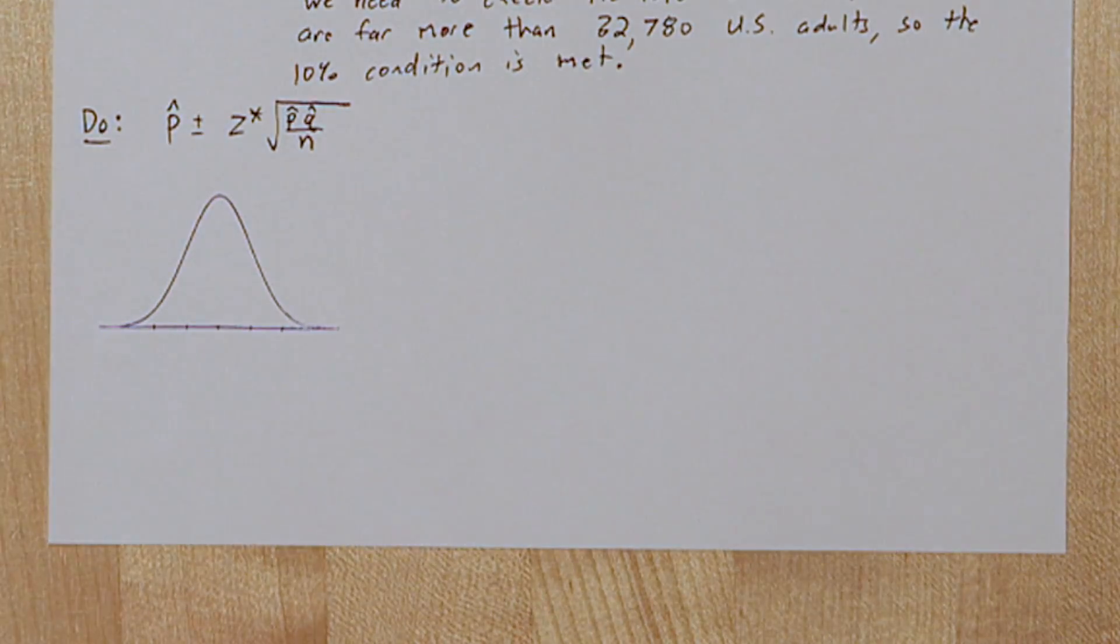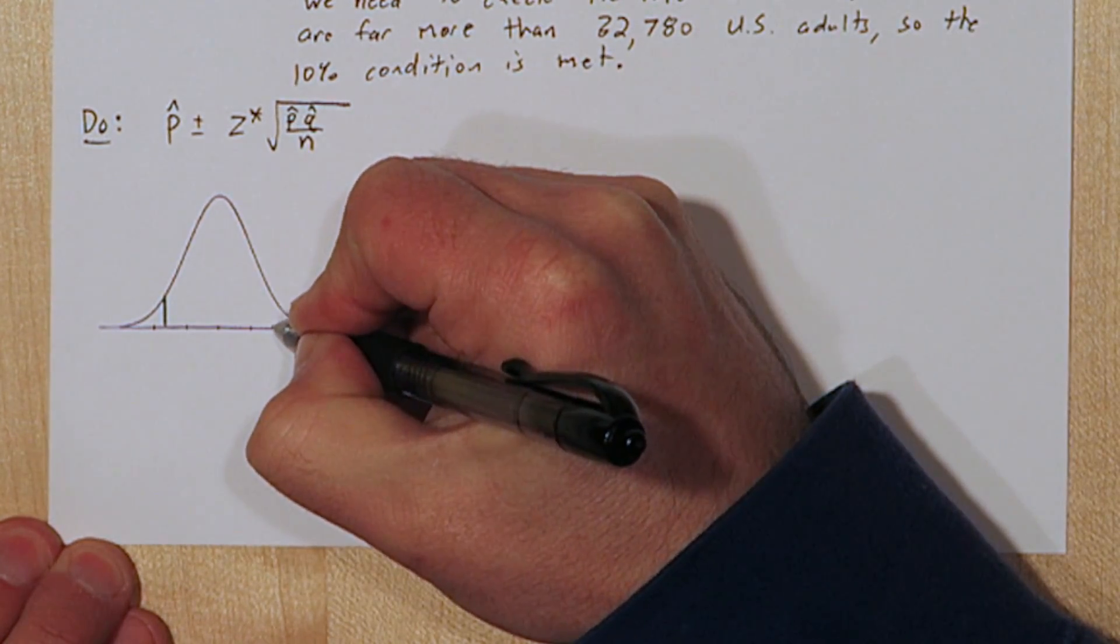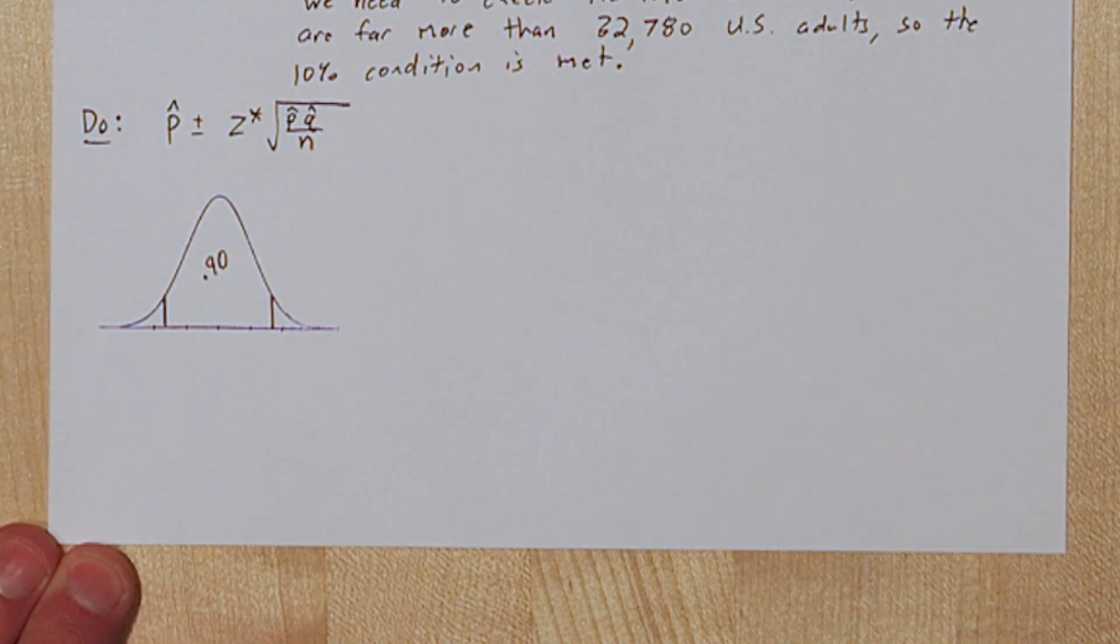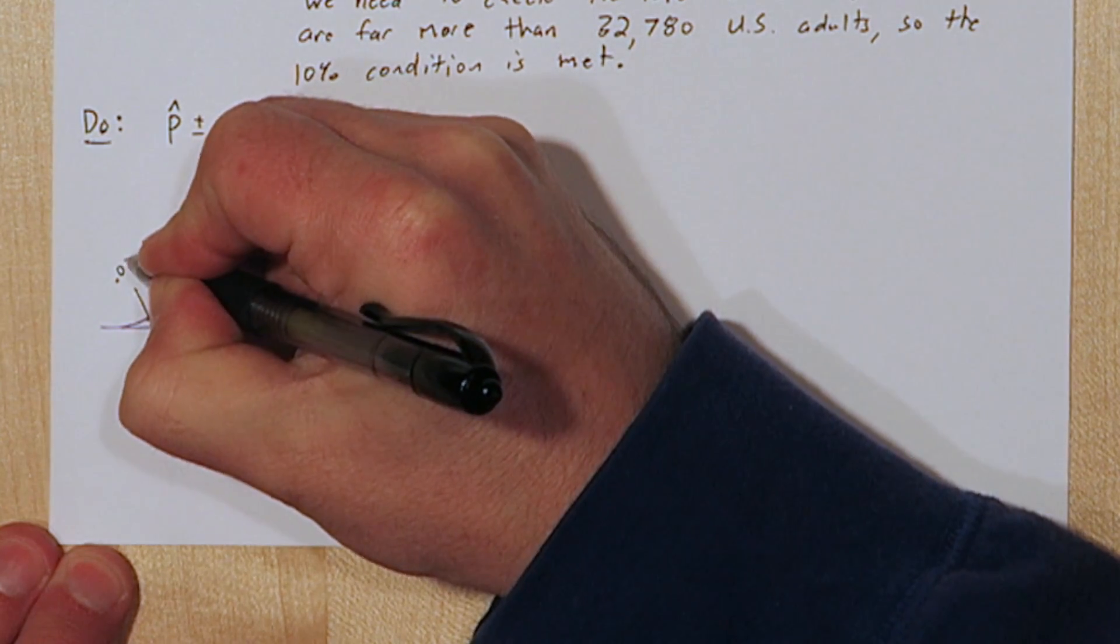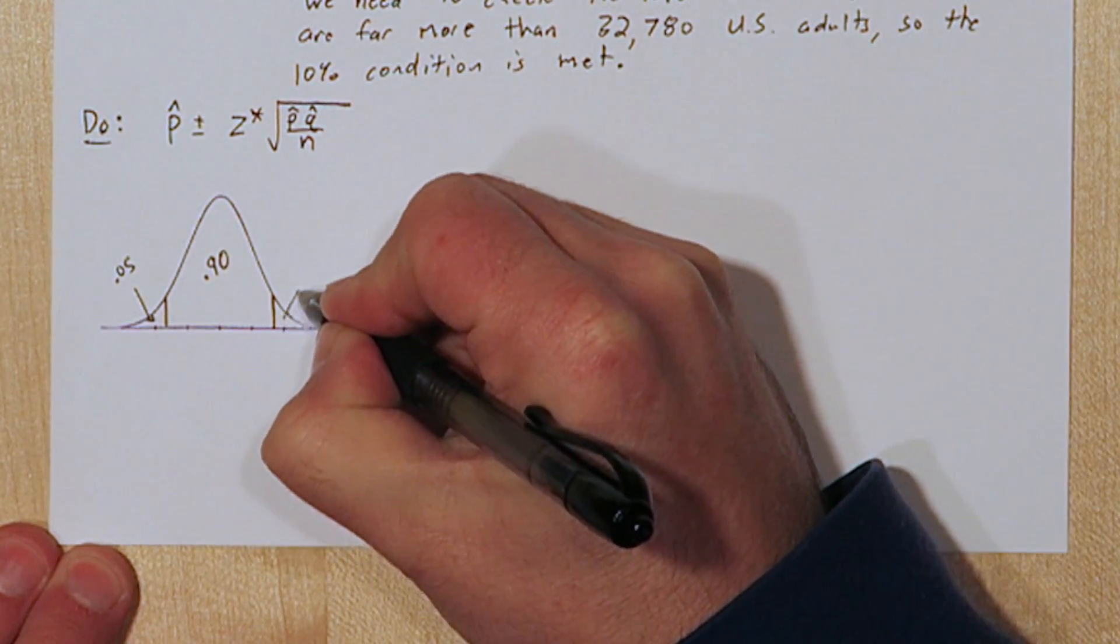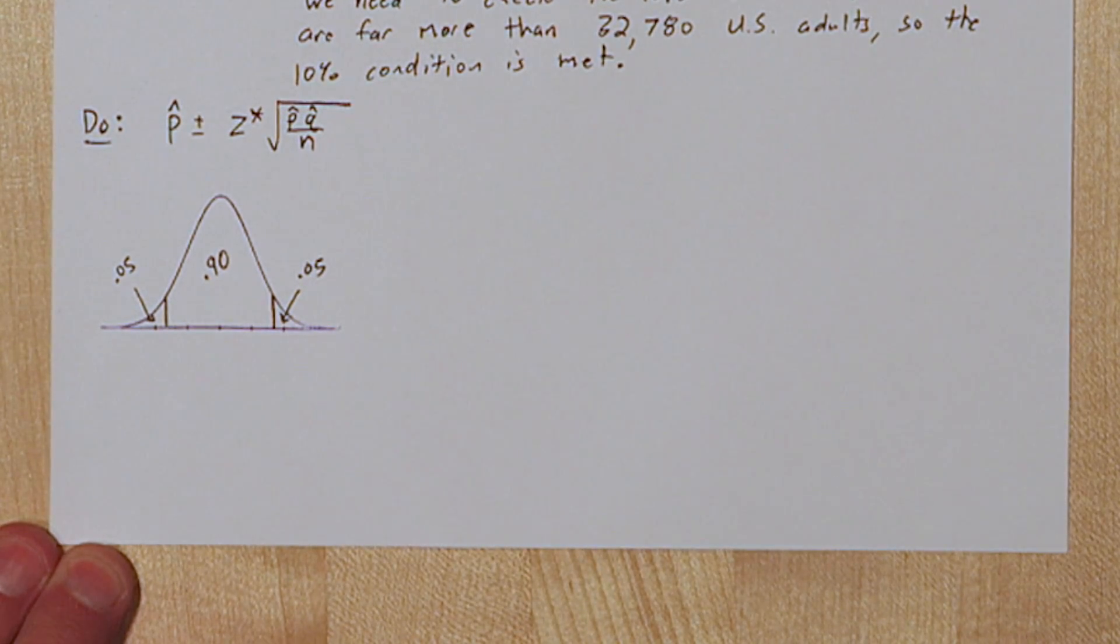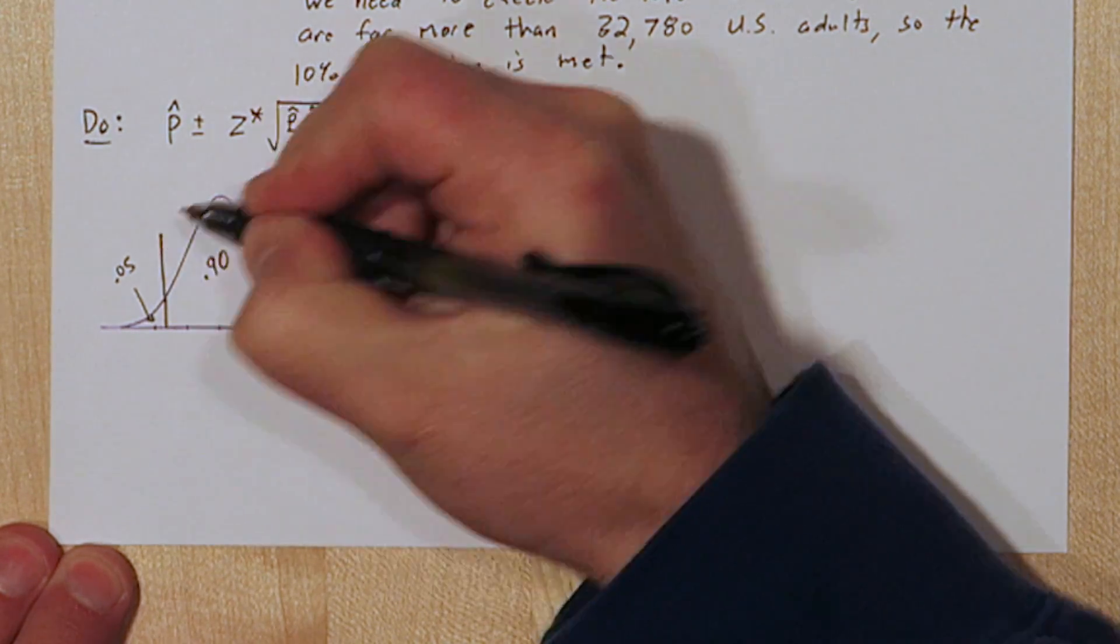Since we're doing normal calculations we have to figure out how far from the mean we have to go to cut off the middle 90% of the normal distribution. If 90% is the middle then each of the tails would have 5% in them. To do this we can use the inverse norm function on the calculator. The way the function works is it tells you what Z-score would cut off the area to the left of the value you input.